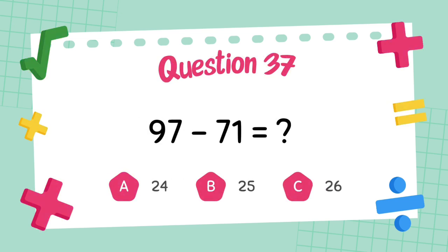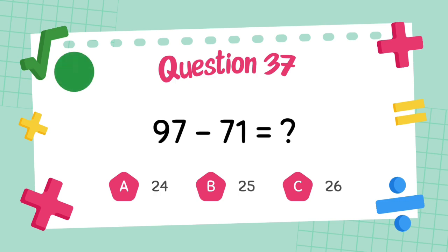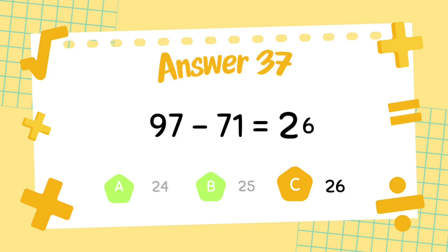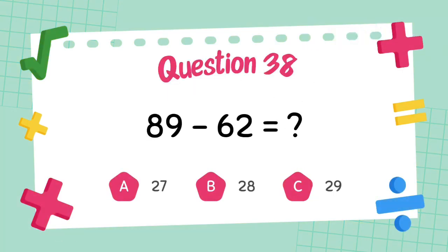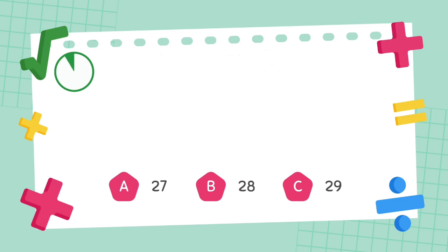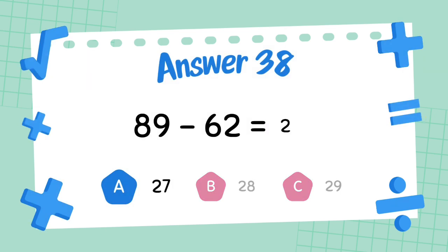What is 97 minus 72? The answer is 26. What is 89 minus 62? The answer is 22.